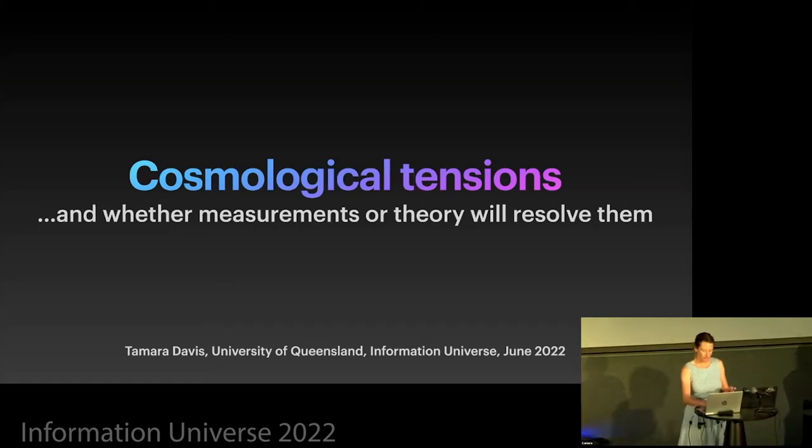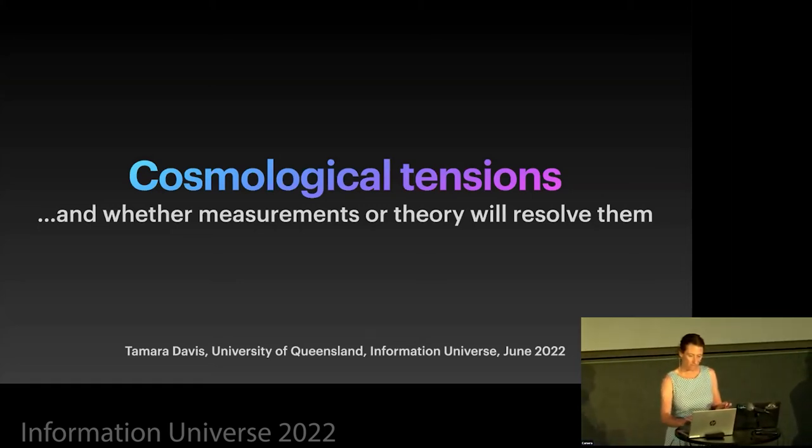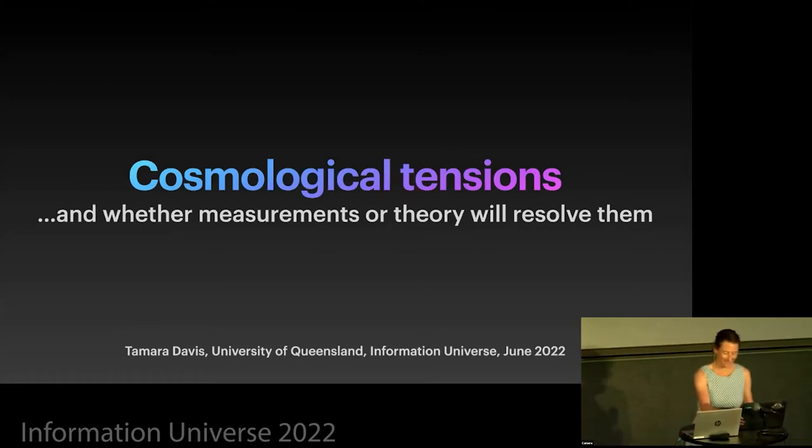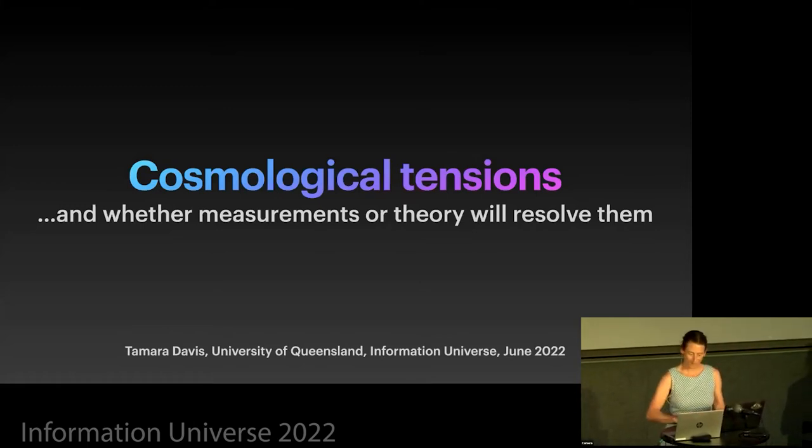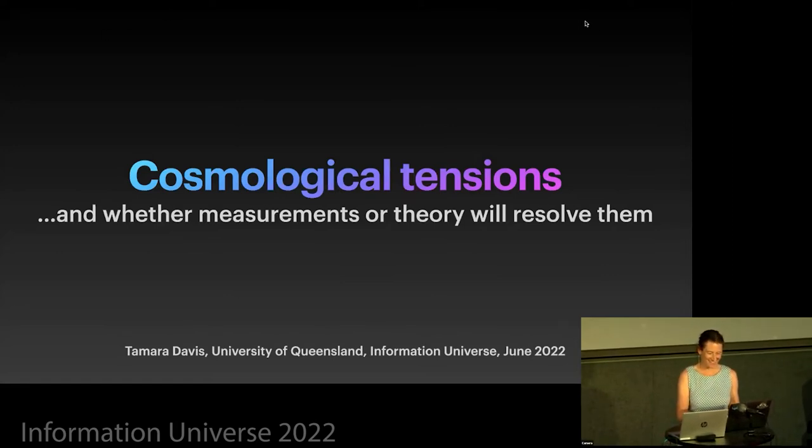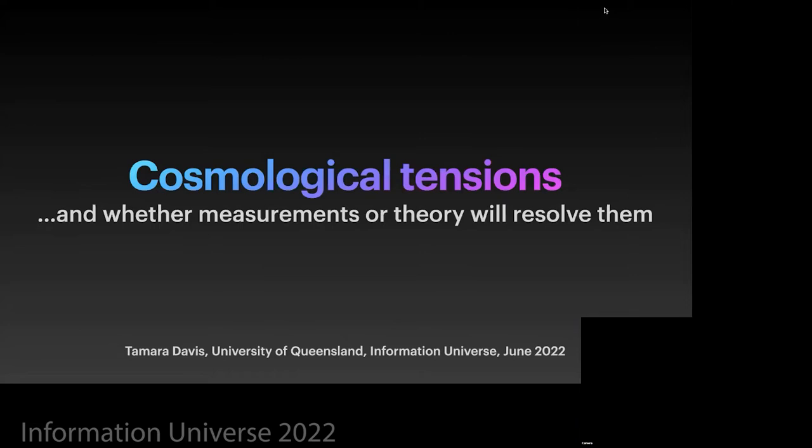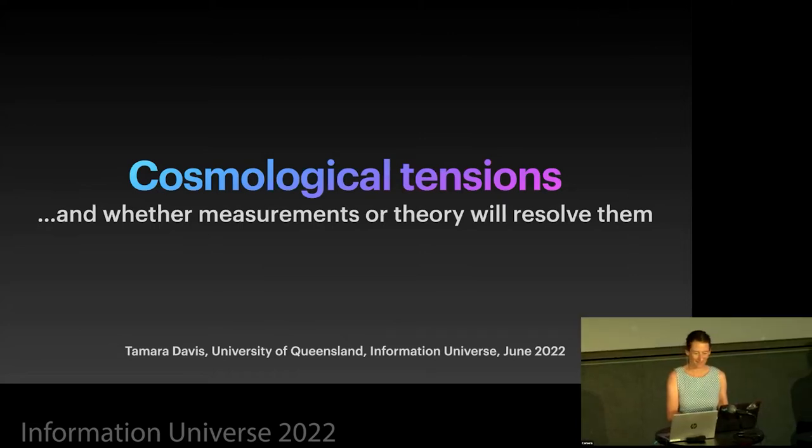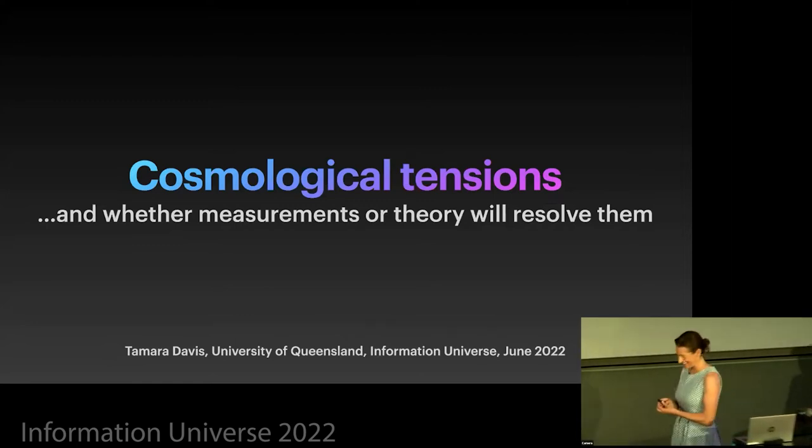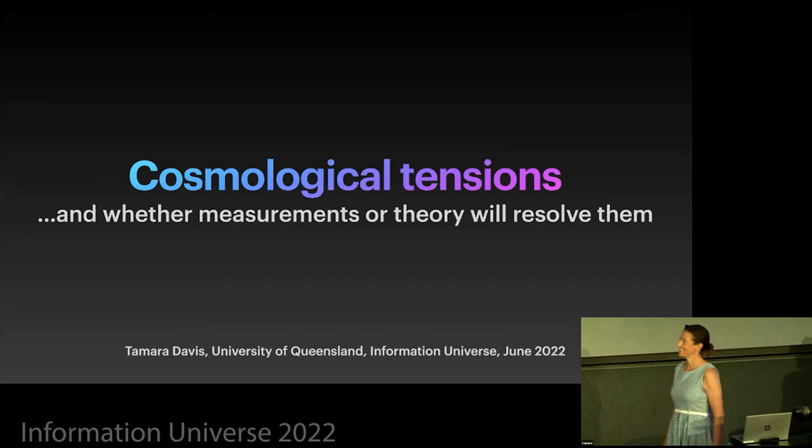Okay, so we'll continue with our next two talks, which you could summarize as there's also a thing as too much information, because once you have too much information, you can get tensions and we're starting to see this in cosmology. I don't think Tamara needs any further introduction, so I'm not going to waste your time on that and give the floor to Tamara, who will talk about cosmological tensions.